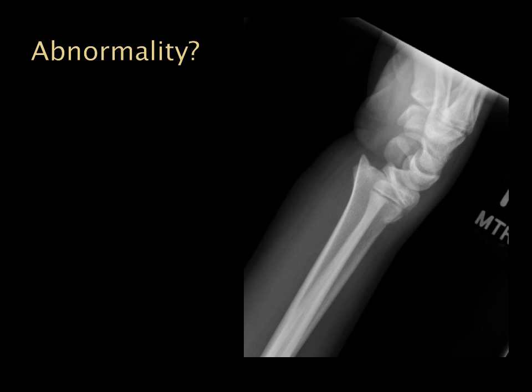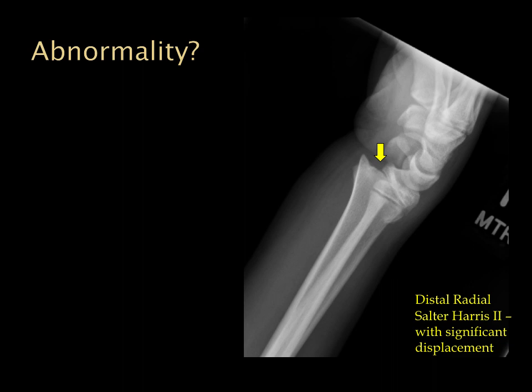Looking at an example, our eye is drawn to a distal radial Salter-Harris 2 fracture. What I want to highlight is that significant displacement can go unnoticed. When it's the epiphysis relative to the metaphysis, we must ensure there isn't significant displacement, as there is here, because epiphyseal injuries heal differently than shaft fractures. The threshold for reduction is higher for epiphyseal displacement than for the radial or ulnar shaft.